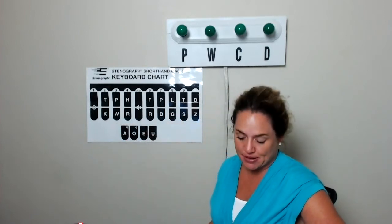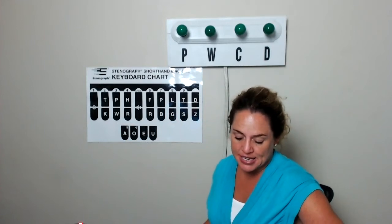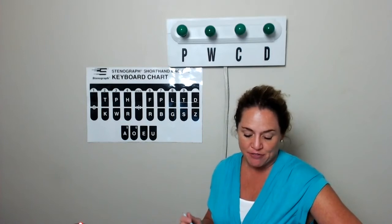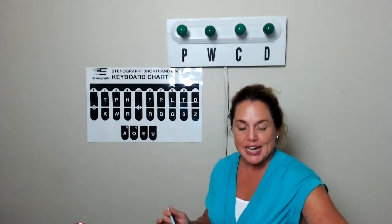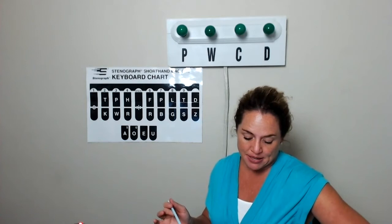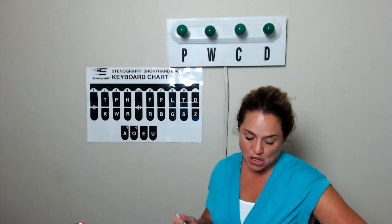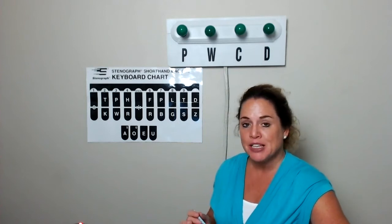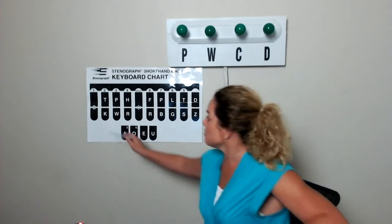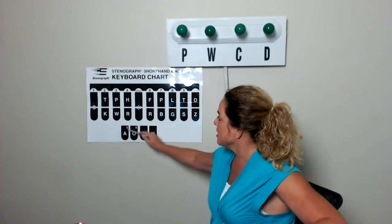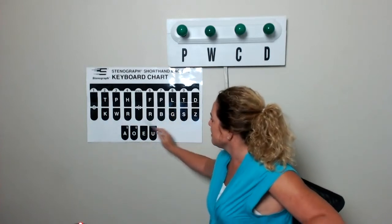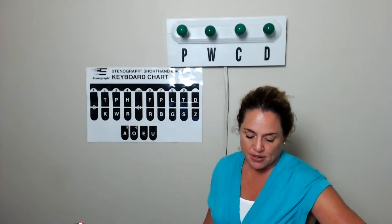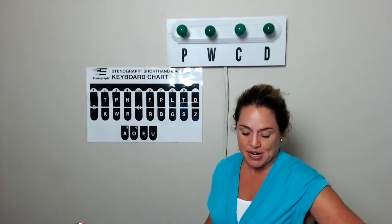Helium. So, we write it as heel yum. Furrier. Again, we drop that long E sound and write furrier. Stadium. Stadium. Curious. Curious. Genius. Now, genius is spelled with a G, but it has a J sound, so we're going to use our initial J. J, long E-N. Come back for Y-U-S. Genius. Furious. We write it as furious.